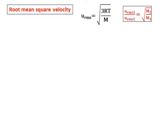The root mean square velocity equals square root of 3RT divided by M, where R is the gas constant, T is temperature in Kelvin, and M is the molar mass. We can compare the RMS velocity of two gases by taking their ratio: RMS velocity of gas one divided by gas two equals the square root of M2 over M1. So RMS velocity is inversely proportional to molar mass — heavier the gas, lesser its speed.